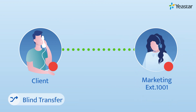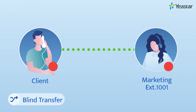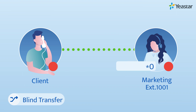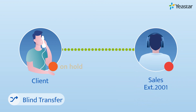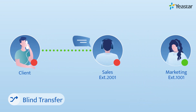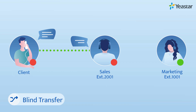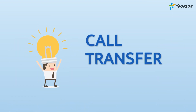The caller doesn't need to repeat his questions and communication moves on smoothly. How about the blind transfer? If no information needs to be shared in advance, you simply need to enter the feature code and the desired extension number, and the caller will be connected to your colleague — leaving you free to answer other incoming calls.